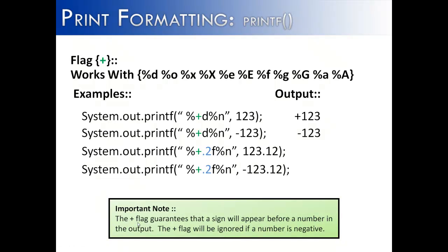The plus flag guarantees a sign will appear before a number in the output. If the number is negative, it'll just ignore it. So we see here that the plus sign is added because the number is positive. But because the number is negative here, it just ignores the flag and adds the negative sign as it normally would.